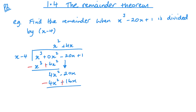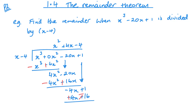Changing my signs and adding leaves me with negative 4x. Bringing down the plus 1, then minus 4x divided by x is minus 4. Multiplying through I get minus 4x, and minus 4 times minus 4 is plus 16. Changing my signs and adding gives 0x and minus 15. So my remainder here is clearly negative 15.